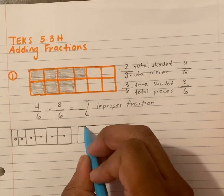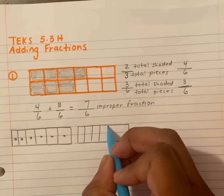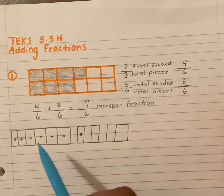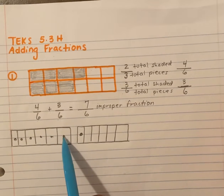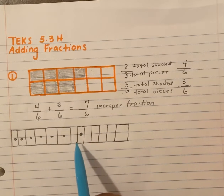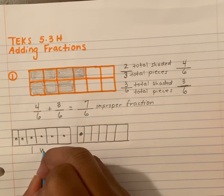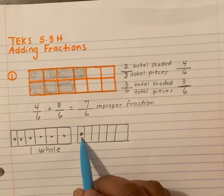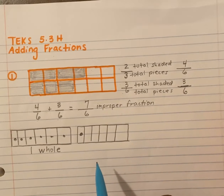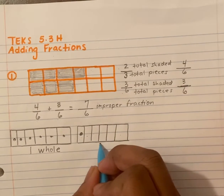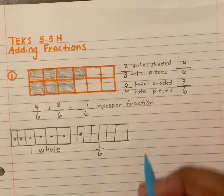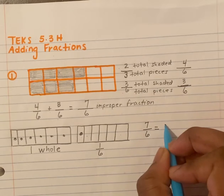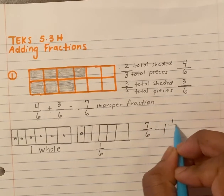So in order to get that one more shading in, I must create another set of six pieces: one, two, three, four, five, six — and then shade that last one. Now I've shaded in one, two, three, four, five, six, seven. Since all of the first set are shaded, we call that one whole. How many are shaded in the second set? One out of six total pieces — so that's one over six. That means seven over six is the same as one whole and one over six.